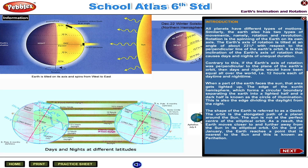When a part of the Earth faces the Sun, the area gets lighted up. The edge of the sunlit hemisphere, which forms a circular boundary separating the Earth into a lighted half and a dark half, is known as the circle of illumination. This is also the edge dividing the daylight from the night.